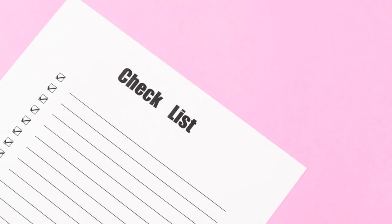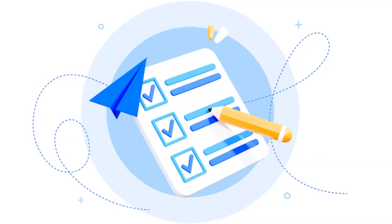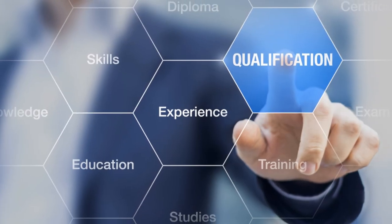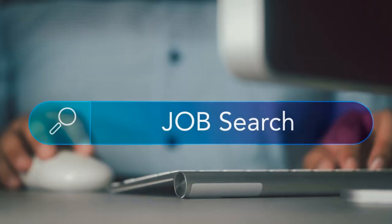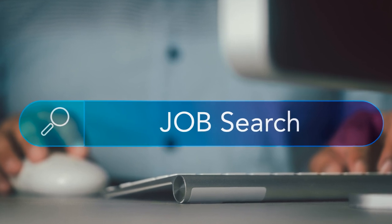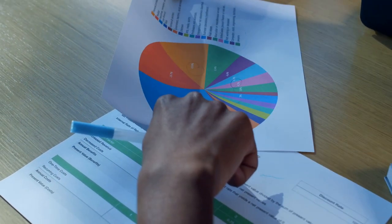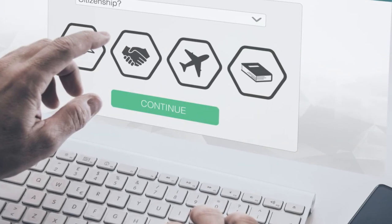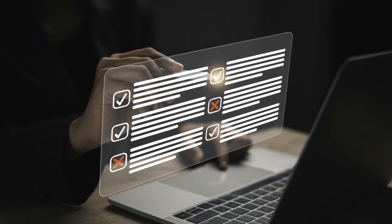Take your time to prepare and make sure all your documents are ready and accurate. First, confirm you meet the eligibility requirements for one or more AAIP worker streams — this is crucial to avoid any hiccups later on. Next, review the Worker EOI points grid carefully. Understanding this will help you maximize your score and know what information you need to provide and how points are awarded.